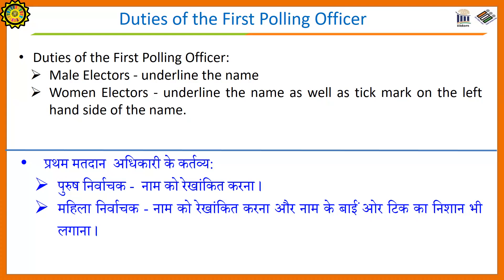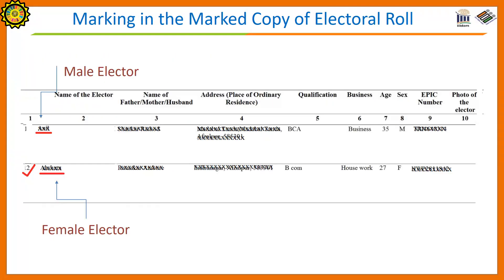For male electors, underline the name. For women electors, underline the name as well as place a tick mark on the left hand side of the name. The way of marking in the marked copy of the electoral roll is shown on the screen.